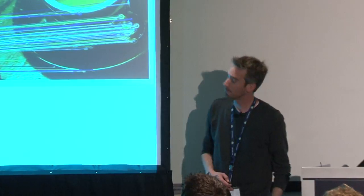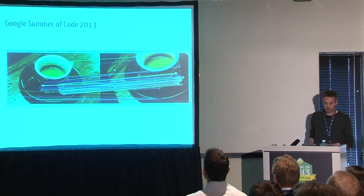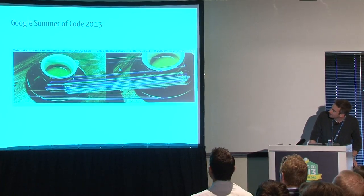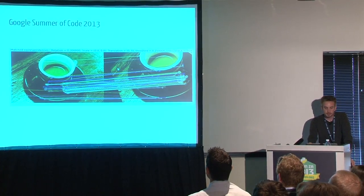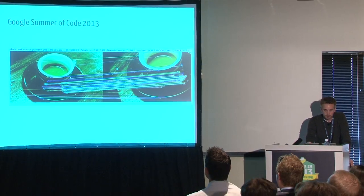We've been fortunate to have three Google Summer of Code students this year working on: image segmentation, image inpainting (filling in scratches on photos), and feature matching — a core component of image alignment. Here's an example of ORB matching, which locates key points and matches them to a target image.